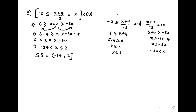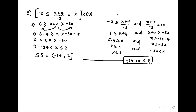Because it was a closed compound inequality, we use 'and' to take the intersection of the two solutions: negative 34 < x ≤ 2. This is what we have in the combined interval form.